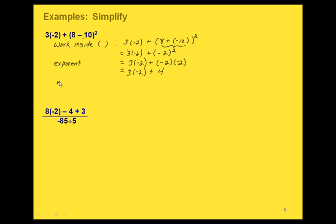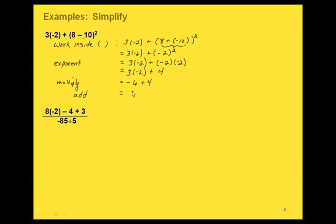Now we have a multiplication and an addition, so we're going to do the multiplication. These two numbers have different signs, so we end up with negative 6. And finally, we add: negative 6 plus 4 gives us negative 2.